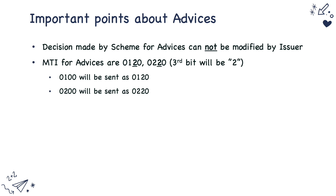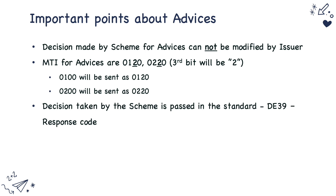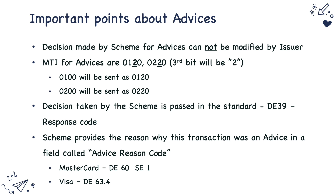What are the MTIs for advices? They are 120, 220, or 420 — where the third digit is 2. When the scheme receives a 100 message, it forwards to the issuer as a 120 message. If the scheme receives a financial transaction request of 200, it forwards a 220 message to the issuer. The decision taken by the scheme is passed in the standard DE39 response code field. The reason the scheme had to stand in is also passed in an advice reason code field — in Mastercard it is DE60, sub-element 1, and in Visa it is 63.4.